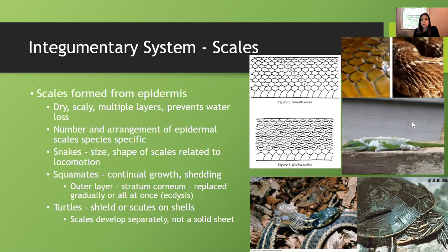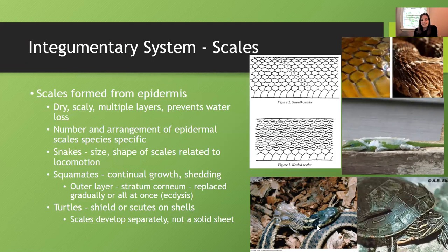Squamates, which includes snakes and lizards, have continual growth of their epidermis — their scales and skin — and they shed continuously. That outer layer is called the stratum corneum, and it gets replaced gradually in some species. In lizards, generally that replacement is gradual. This is a green anole — it's just shedding. Pieces kind of flake off here and there; it's not like one continual piece like we see in snakes, where you get a nice snake skin shed all in one piece.